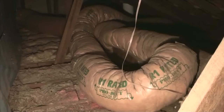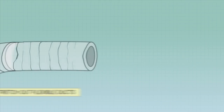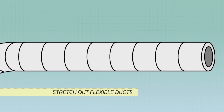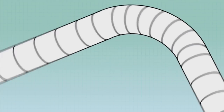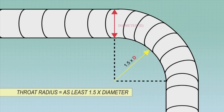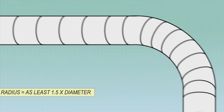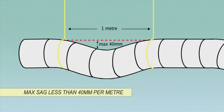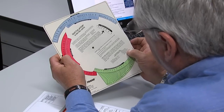Poor ducting can waste a lot of energy. Make sure you follow the Australian Standards and the Building Code of Australia when installing ducting. To minimise flow resistance, stretch out flexible ducts and don't bend them unnecessarily. 90 degree bends must have a throat radius of at least 1.5 times the diameter of the duct. Duct work must be supported every 1.5 metres, and the maximum sag between supports must be less than 40 millimetres per metre. Duct sizing is crucial, so use a ductulator to size each duct.